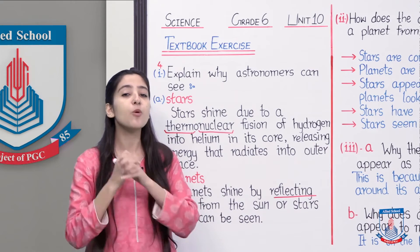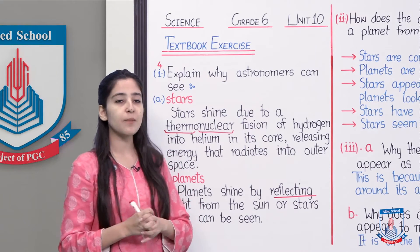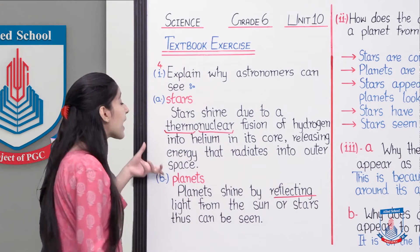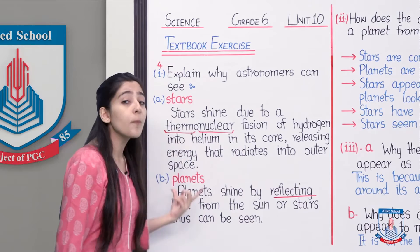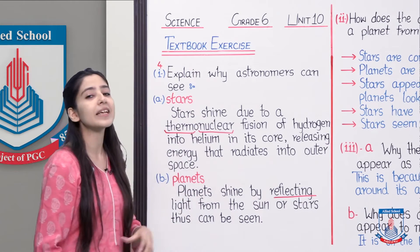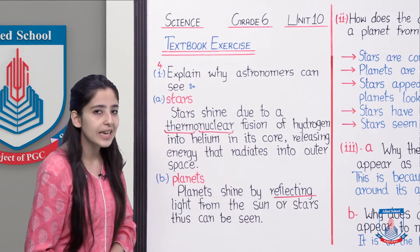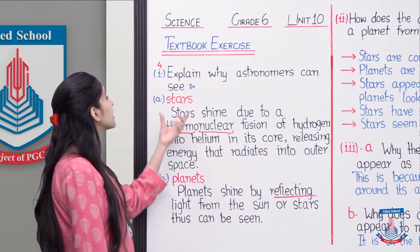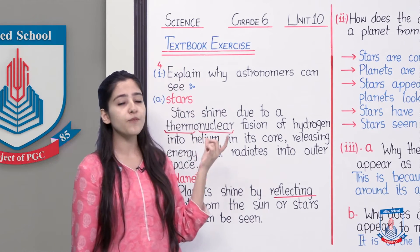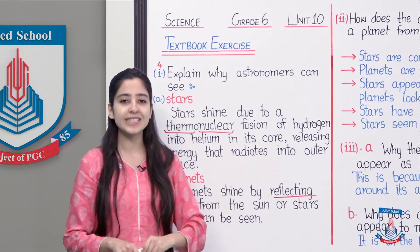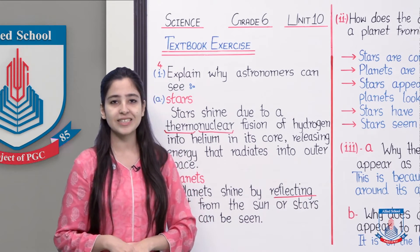So mujhe umeed hai ki aapko bahut achhe se samajh aa gaya ki astronomers ko stars aur planets kis tarha se nazar aate hain. This was the first part of question number four, now we will move towards the second part.